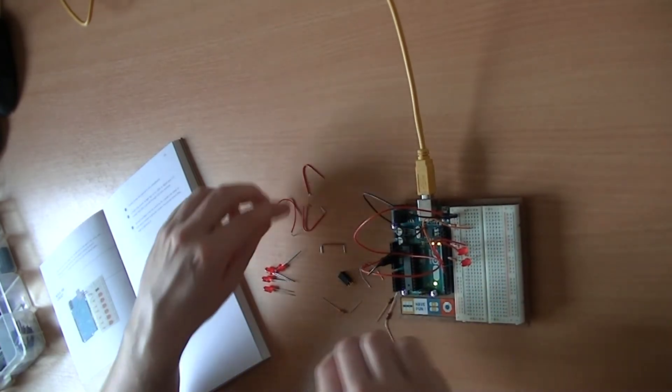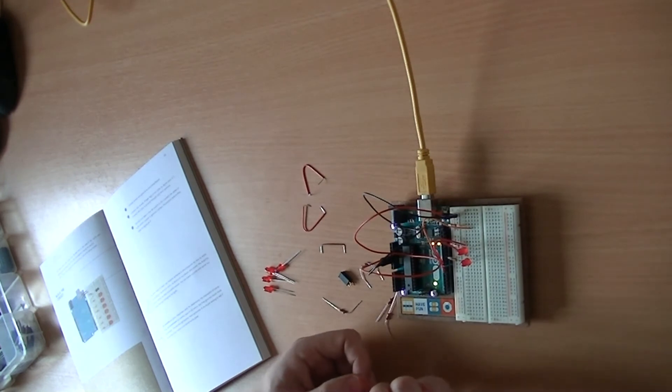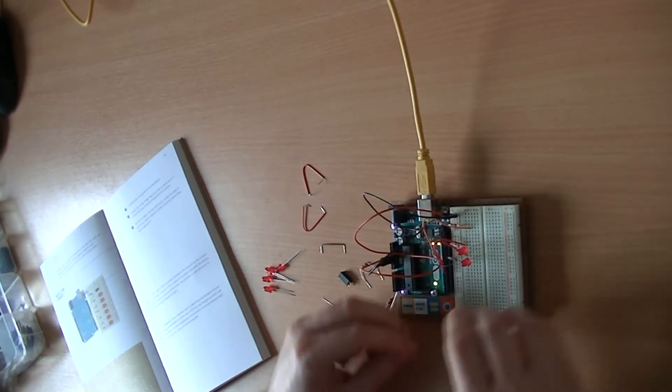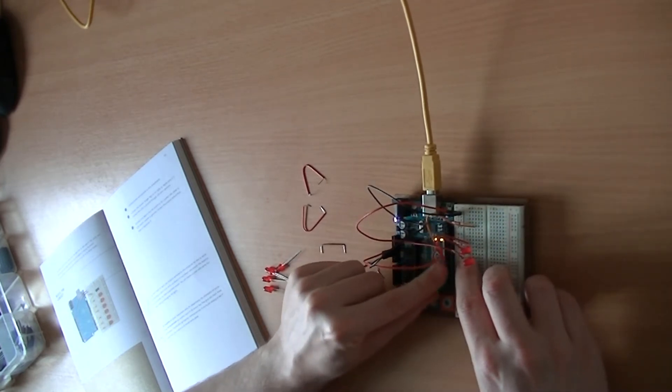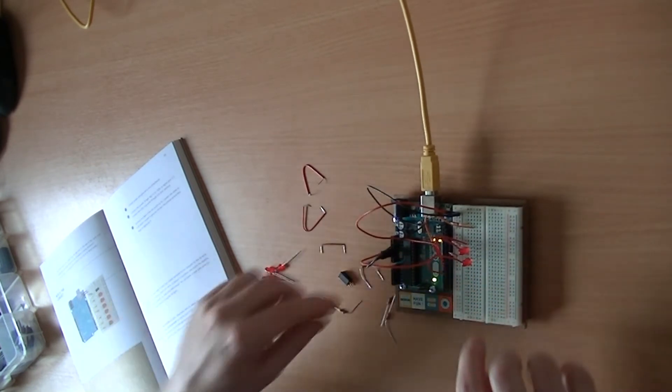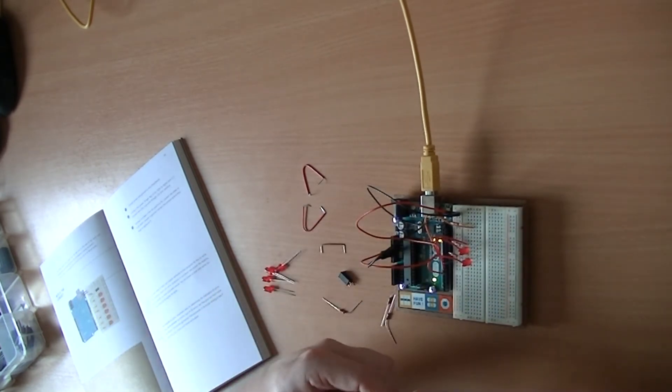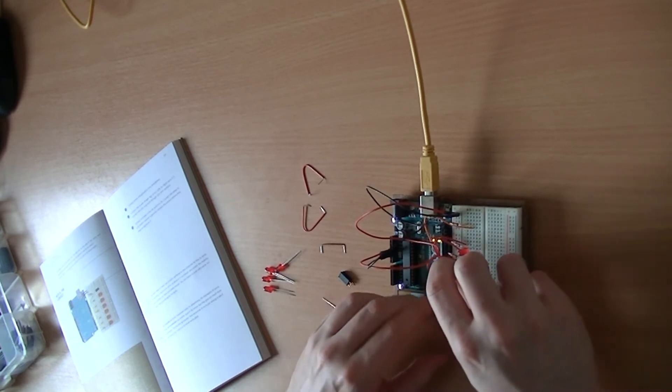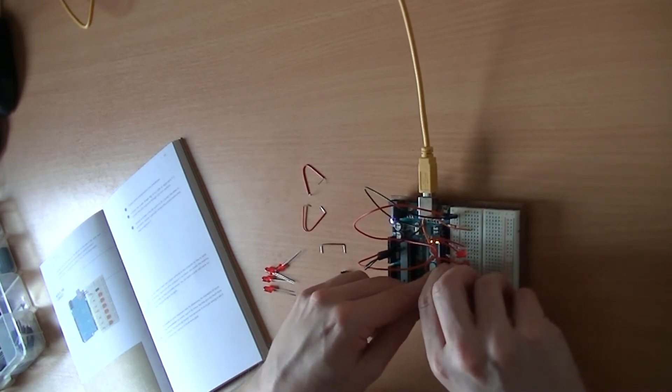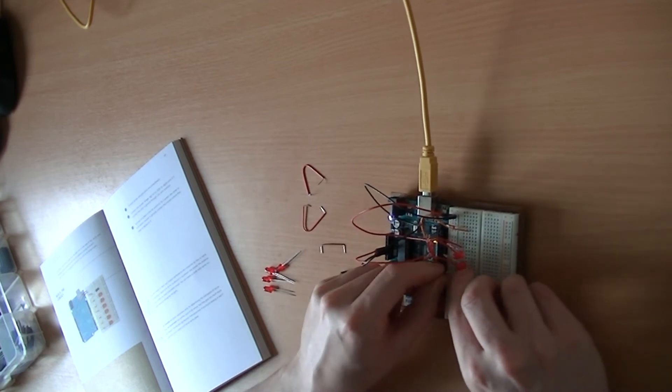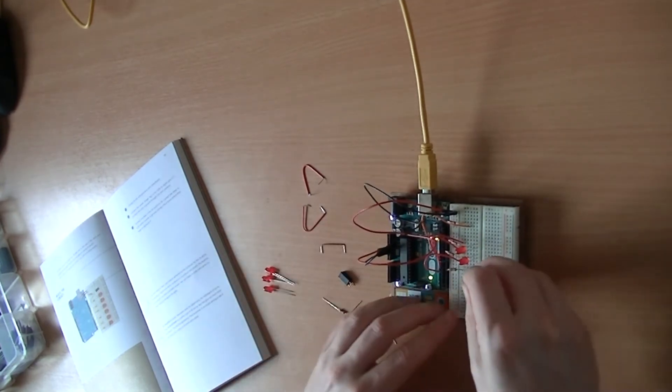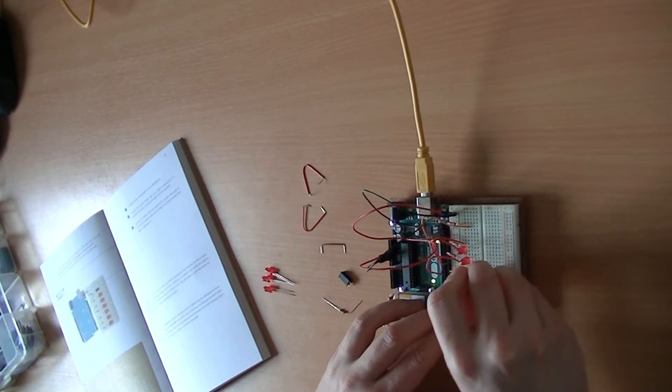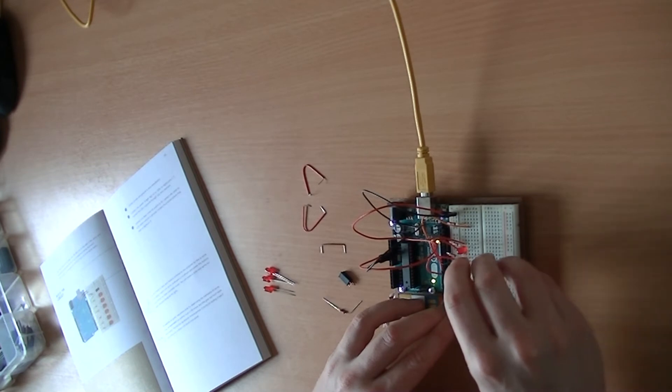Perfect. Then we'll want to connect the next LED between let's say row 16 here and digital port 6, like so. With a resistor between row 17 and ground. There's the ground in, there's row 17 in. And then our LED. Again, long leg attached to row 16 which is attached to digital port 6. There we go.